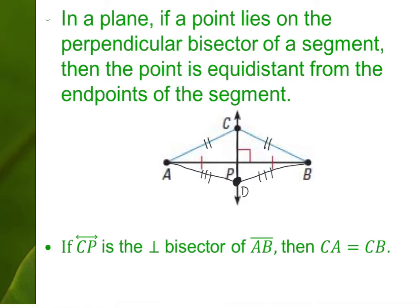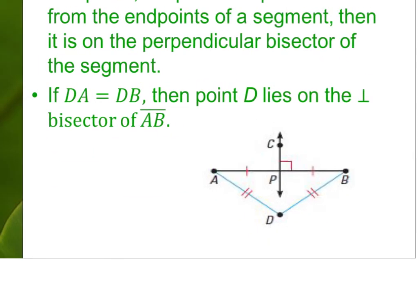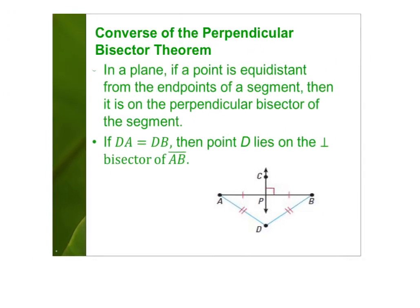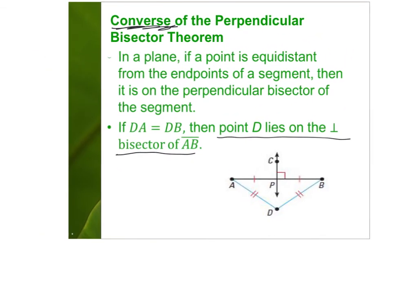The converse of the perpendicular bisector theorem: if AD and DB are the same length, then CP must be the perpendicular bisector. If DA equals DB, then point D must lie on the perpendicular bisector of AB. So the converse tells us that point D lies on the perpendicular bisector of AB — it uses the reverse: you're given those two sides are equal and prove it's the perpendicular bisector.